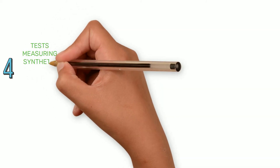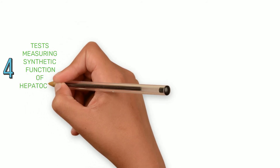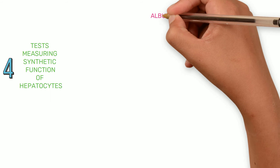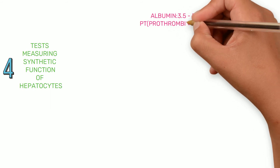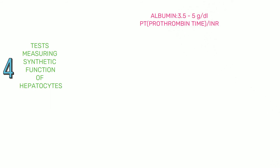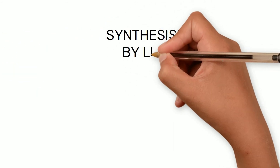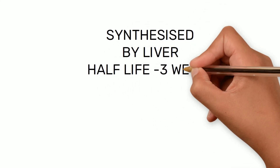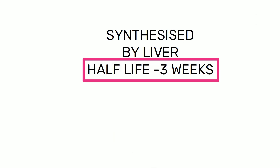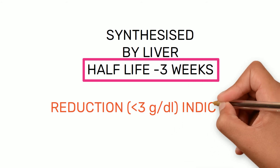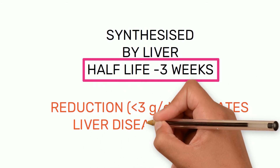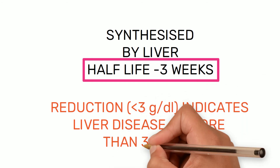The fourth group tests measure synthetic function of hepatocytes. There are two tests: albumin and prothrombin time or INR (international normalized ratio). Albumin is synthesized exclusively by the liver and has a half-life of three weeks. A reduction to less than 3 grams per deciliter indicates liver disease of more than three weeks duration, so albumin is reduced in chronic liver disorders and cirrhosis. However, hypoalbuminemia is not specific for liver disorders.